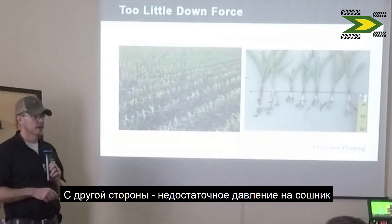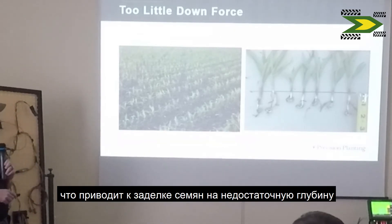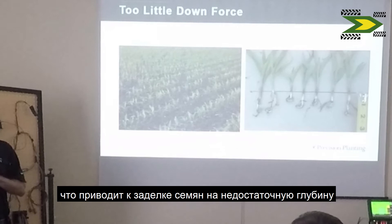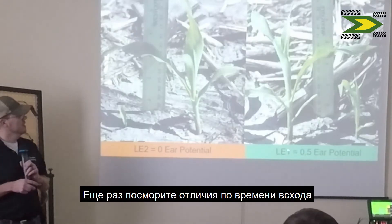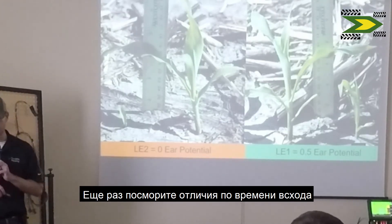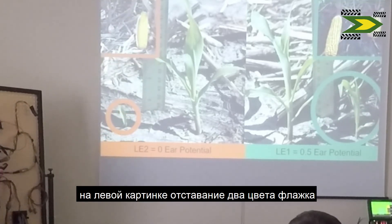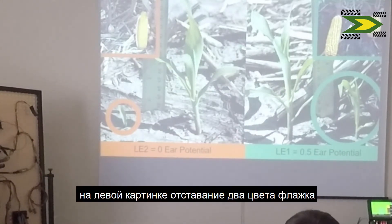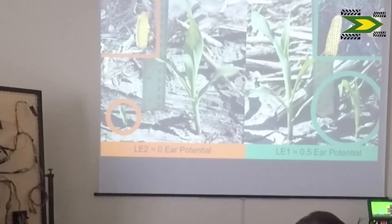On the other side of downforce management, we can have too little force on the row unit. Too little force results in seeds not being placed consistently at the desired depth, so these plants end up coming up late. With this one-leaf-color-behind scenario, you have about half an ear potential. You can see that in pictures in the field — this plant produced almost no ear versus the plant next to it producing a nice ear, while the plant one leaf color behind produced about half an ear.